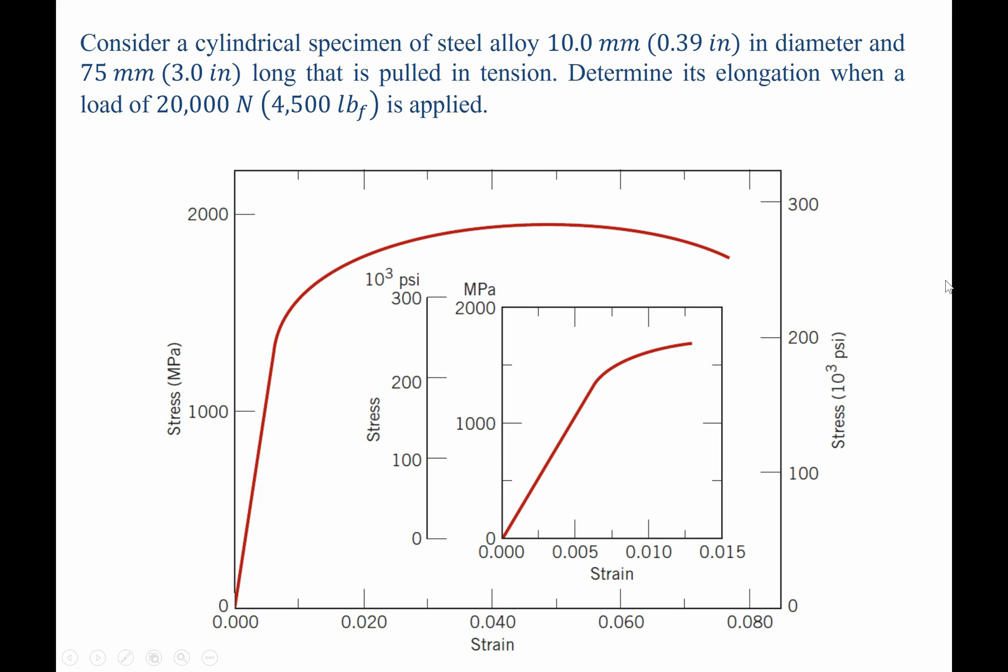For this question, we are told to consider a cylindrical specimen of steel alloy 10 millimeters in diameter, 75 millimeters long, pulled in tension, and we're asked to determine its elongation when a load of 20,000 newtons is applied.